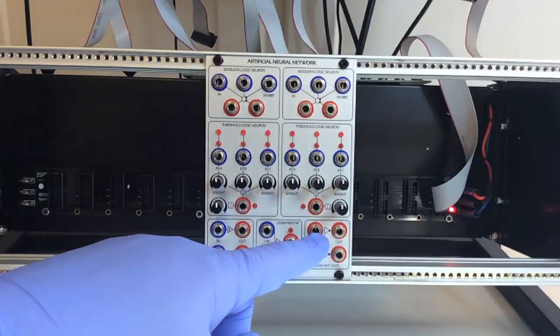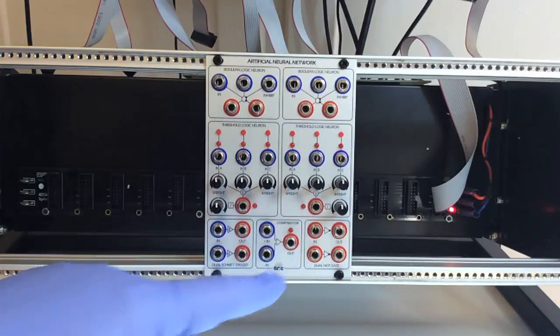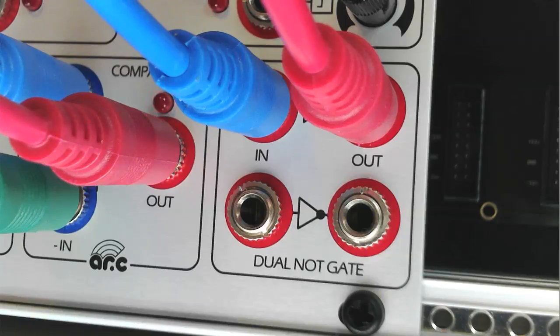Inverter Submodule. This submodule has two identical logic level inverters. The inputs take a logic level signal, either 0 or 5 volts, and invert that signal as the output.